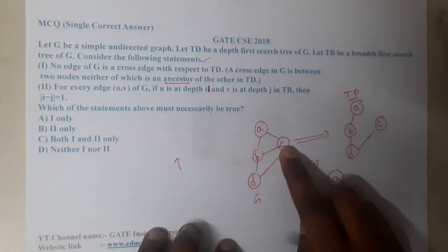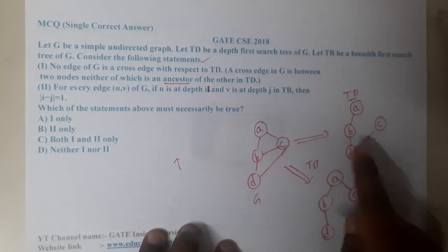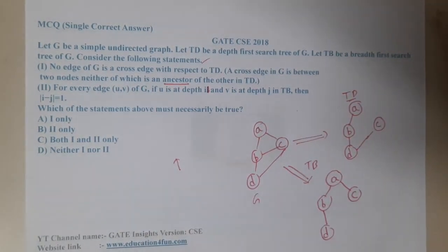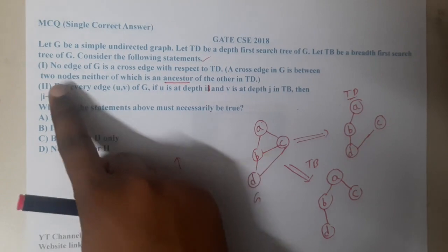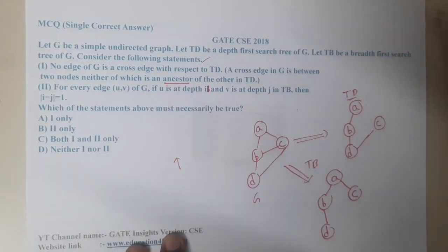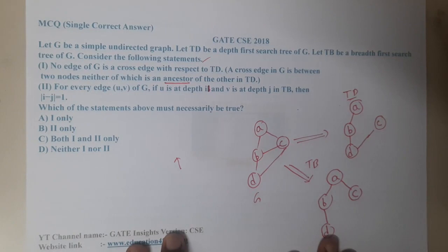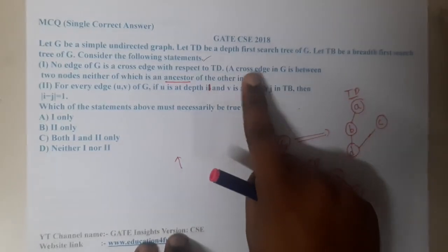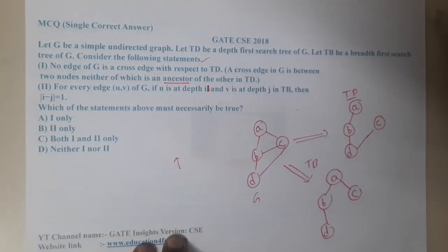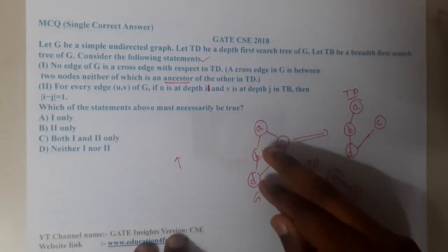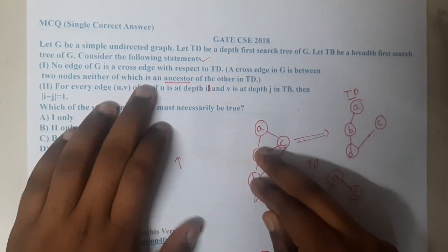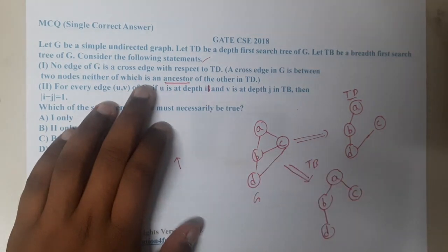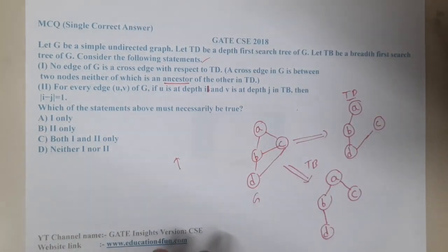Going back to statement one: no edge of G is a cross edge with respect to TD. A cross edge in G is between two nodes neither of which is an ancestor of the other in TD. This statement seems a bit confusing, so let us understand it again.